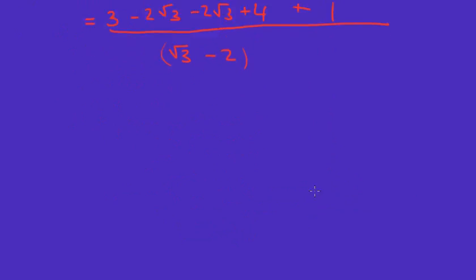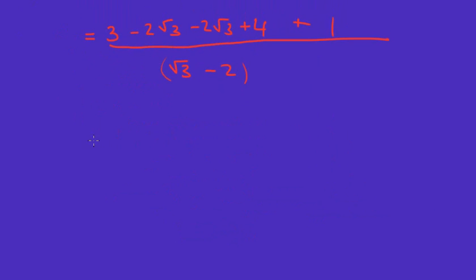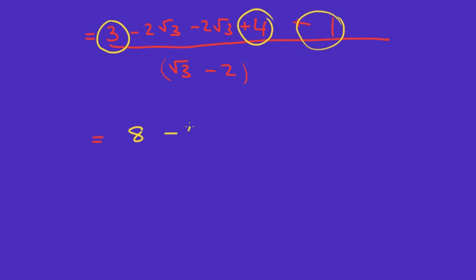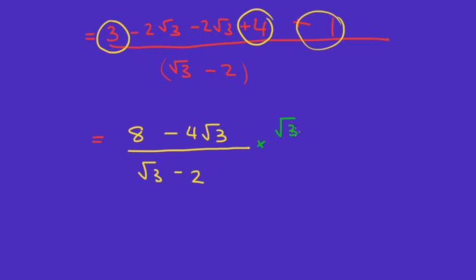Now it comes to the simplifying spot. I've got the whole numbers: three plus four is seven, plus one is eight. Then I've got minus two root three minus two root three, which is minus four root three — you might already have that if you did the perfect square. Over root three minus two. Now, once again, you might think you're done and finished. But lo and behold, we're not simplified — we have an irrational number as a denominator. So let's times this by root three plus two over root three plus two, in order to get rid of that irrational denominator.